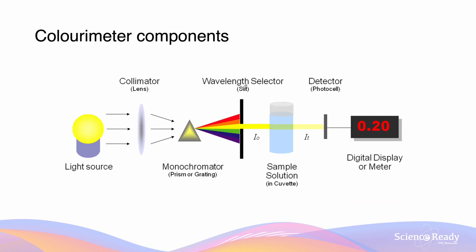Let's look at the components of a colorimeter. In our colorimeter, we have a light source, which is then focused by a collimator — that's just the lens — and that light source is then refracted through the monochromator and passed through a wavelength selector. This wavelength selector is going to filter out our undesirable wavelengths of light which we do not want to analyze. Once this is done, that wavelength of light passes through our sample of solution, and a detector will then determine how much of the light was absorbed and display that on a digital display.